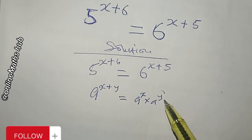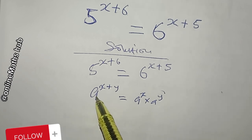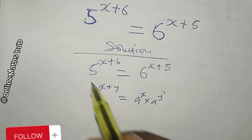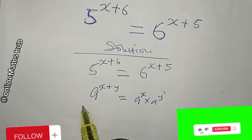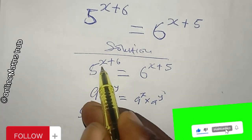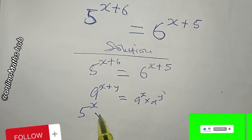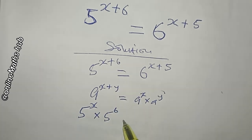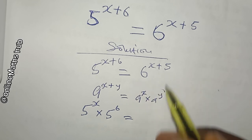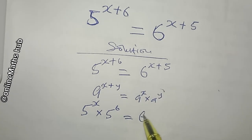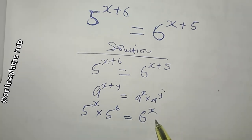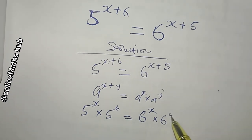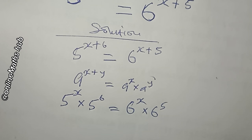Using this rule, the left hand side changes to 5 power x multiplied by 5 power 6. And using the same rule on the right hand side, I'm going to have 6 power x multiplied by 6 power 5.